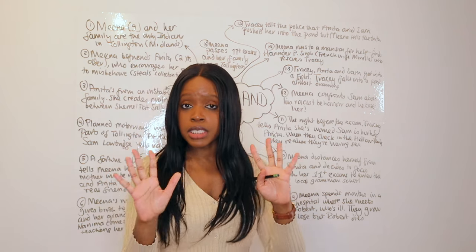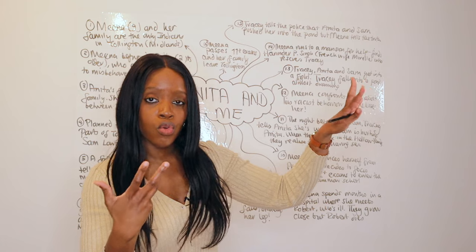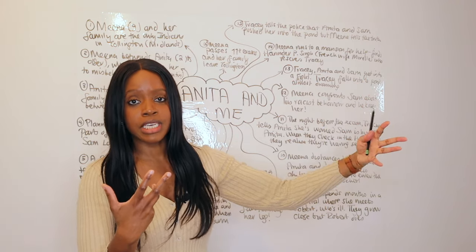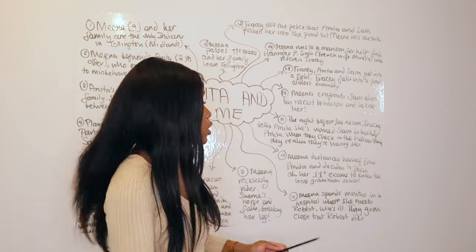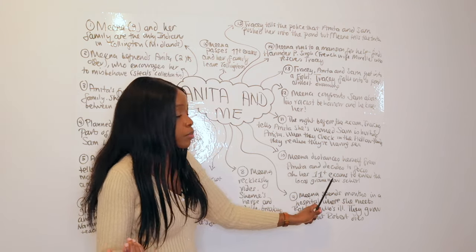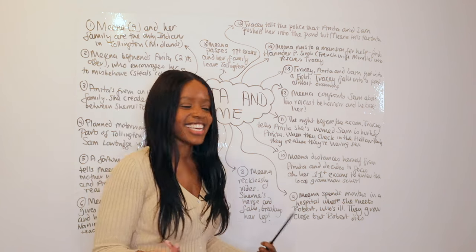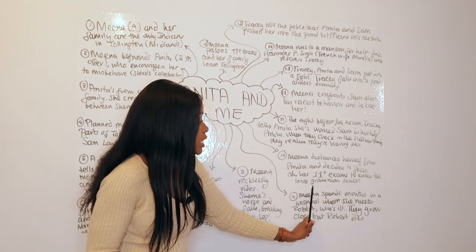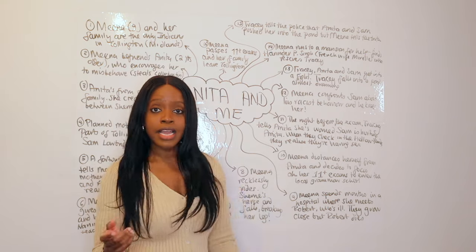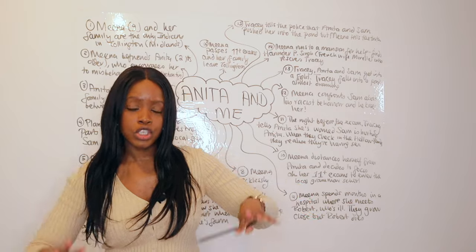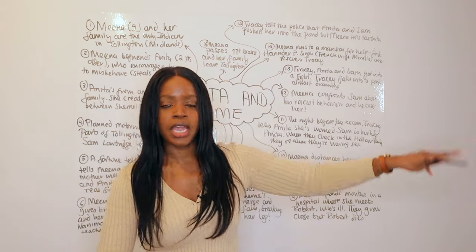Having discovered what she knows about Anita and Sam, Mina decides to distance herself from Anita and focus on her 11-plus entry exams. There is a local grammar school she can attend if she passes — rather than the state school everyone else, including Anita, is going to. Mina studies really hard, becomes the good girl her parents want her to be, and they are delighted to see her taking exams seriously. She promises them she'll be ready for her 11-plus the following morning.